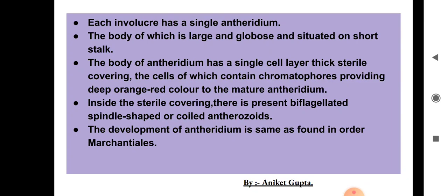Each involucre on a male plant contains a single antheridium. The antheridium has a large globose body with a small stalk underneath. The globose body is very large in size. The body of the antheridium has a single cell layer thick sterile covering, which covers the mass of biflagellated, spindle-shaped or coiled antherozoids — these are the male gametes.